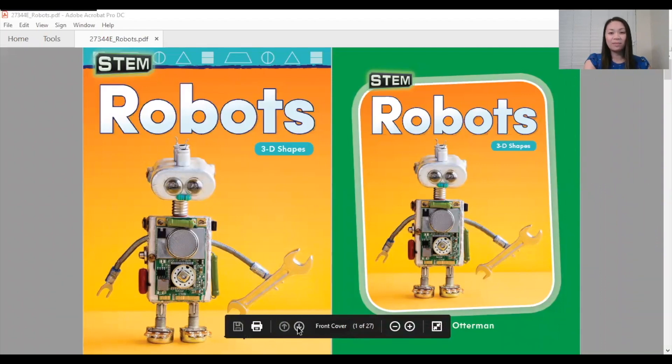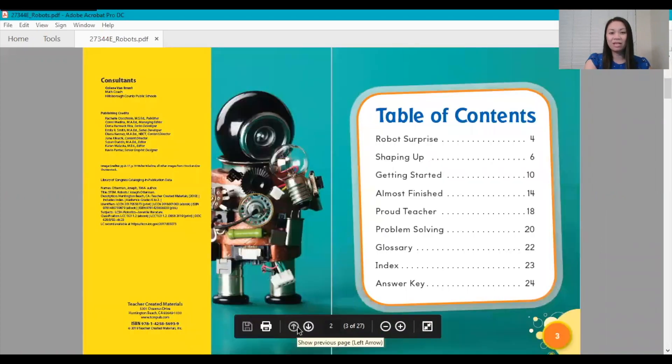Robots: Focusing on 3D Shapes, a book by Joseph Otterman. Here's our table of contents.